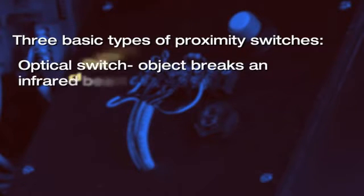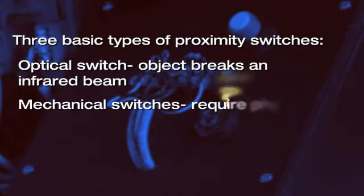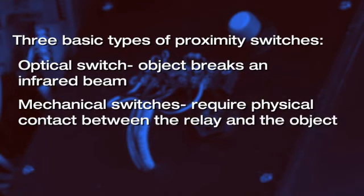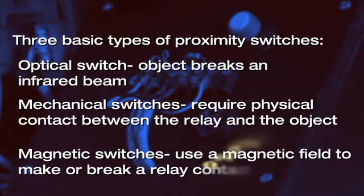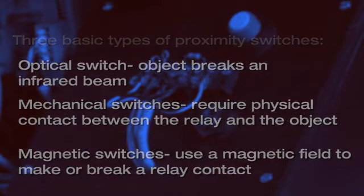With an optical switch, the object breaks an infrared beam. Mechanical switches require physical contact between the relay and the object, while magnetic switches use a magnetic field to make or break a relay contact.